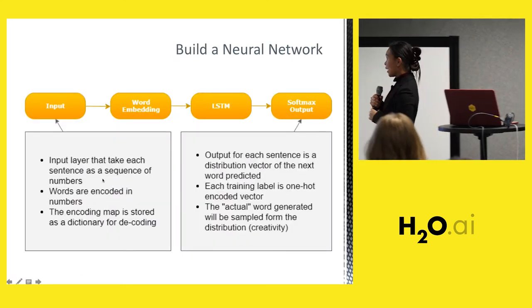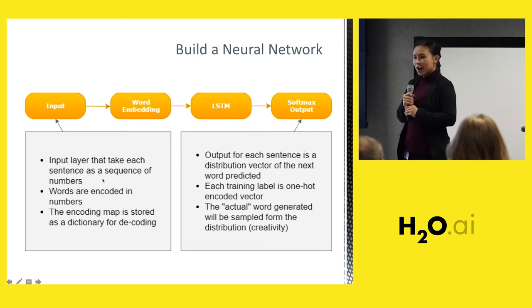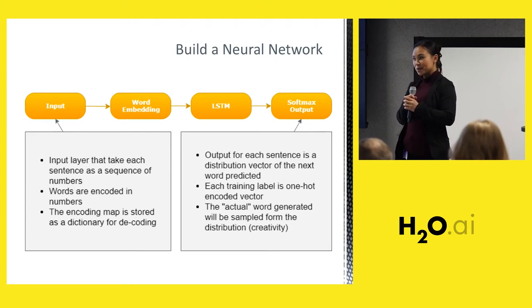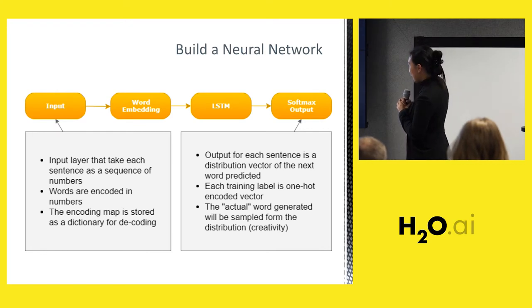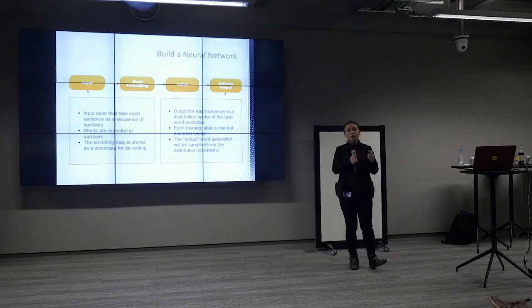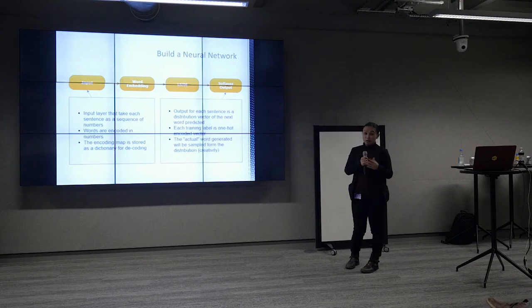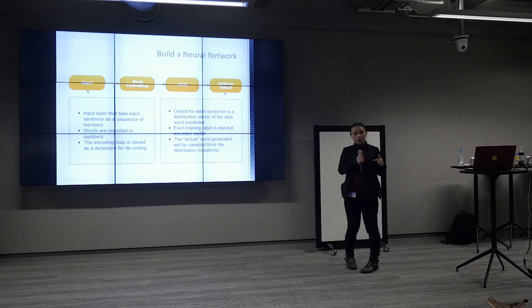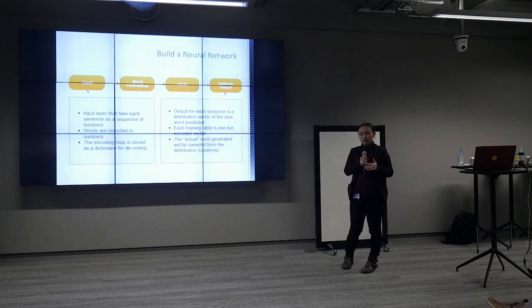Before I show you my result, let me explain how I do it. So I have a small neural network with four layers. The first is the input layer. In the middle we have word embeddings, which I'll explain, and also LSTM — Long Short-Term Memory — which I'll also explain. At the end we have a softmax output because we want an output that is like a distribution, and I'll explain why in a moment.